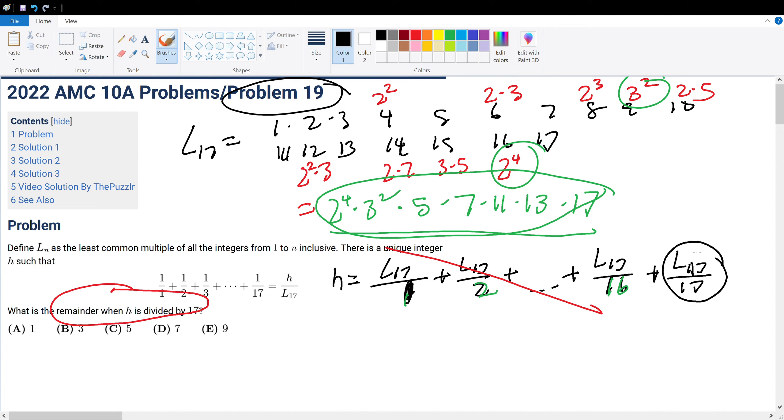Okay, now when we have L17 divided by 17, obviously this goes, so we have 2 to the power of 4, we could rewrite this as 16 times 9 times 5 times 7 times 11 times 13. Okay, so H equals this number right here, so what is this number mod divided by 17's remainder? So, that's basically all this question is asking for. So, it's pretty straightforward.